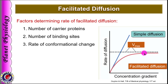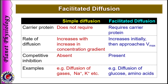Please clarify this concept: in simple diffusion, as concentration gradient increases, rate of simple diffusion also increases, showing a straight line — there is no Vmax, no maximum rate achieved. But for carrier-mediated diffusion, there is a Vmax. Summarizing the important differences: simple diffusion does not require a carrier protein, while facilitated diffusion does. Rate of diffusion increases linearly with concentration gradient for simple diffusion, whereas in facilitated diffusion, rate increases initially and then approaches Vmax.